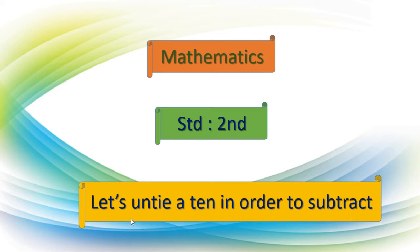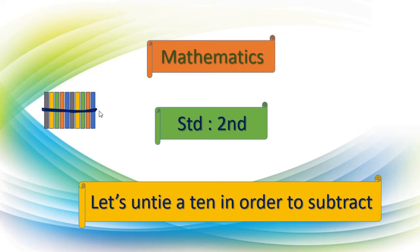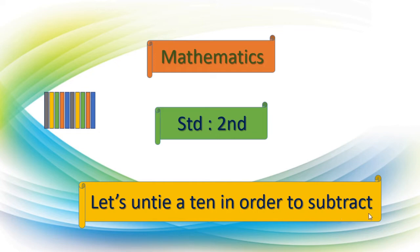We will try to understand the meaning of 'untie.' Here you can see a bundle of sticks tied with a string — it has 10 sticks. Ten sticks bundled together with a string. When we take out the tied string, that is called untied, meaning we separated them. Like this, we will untie a 10 in order to subtract. Whenever we tie 10 units together, it becomes one ten. Here, what we did is untied one ten.